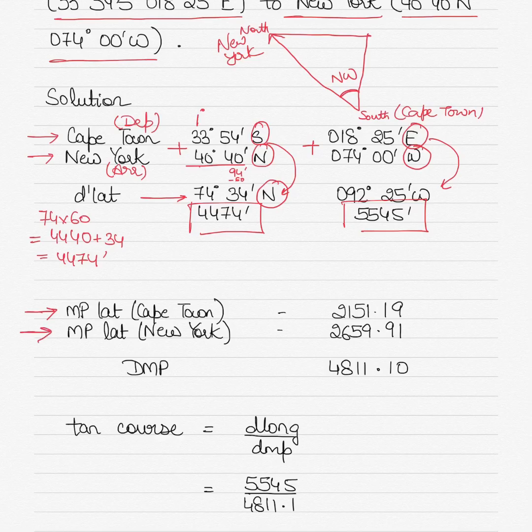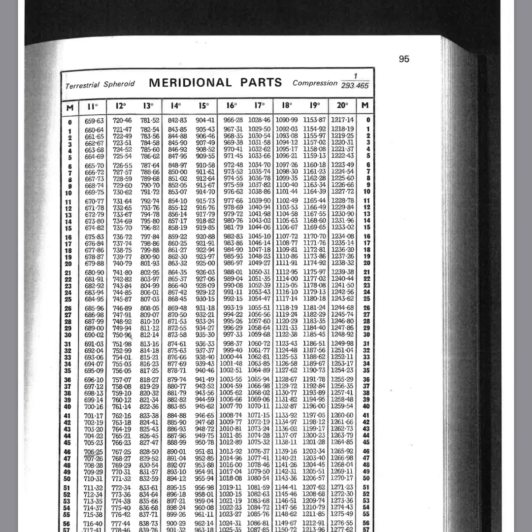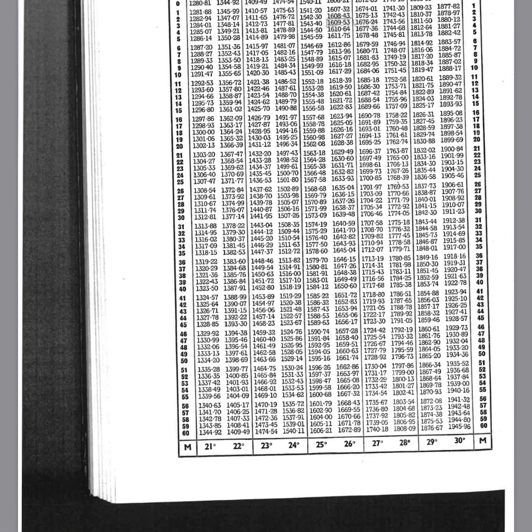Now what else you can do is from the two latitudes calculate the meridional parts. In this case the Cape Town latitude is 33°54' and New York latitude is 40°40'. Let's go into the Norie's tables. In Norie's tables you have the meridional parts tables. I'll show you how they look like and let's find out the meridional parts value for 33°54' and 40°40'.